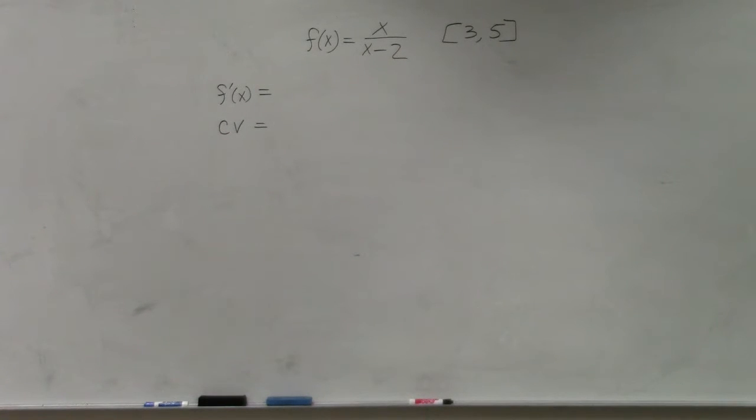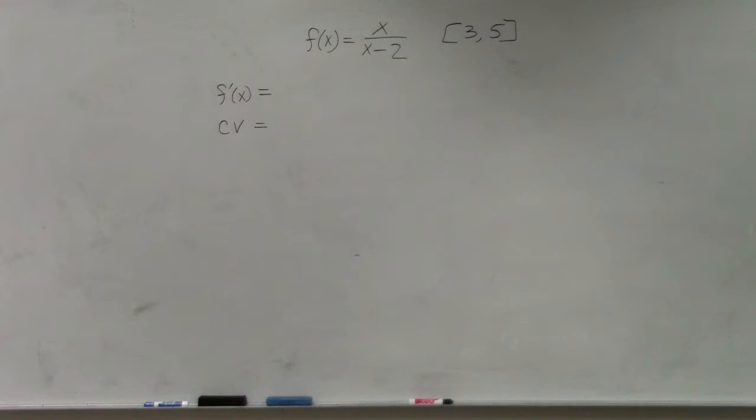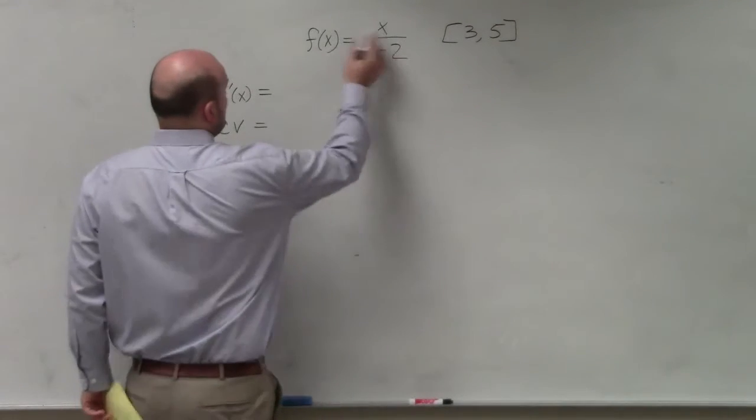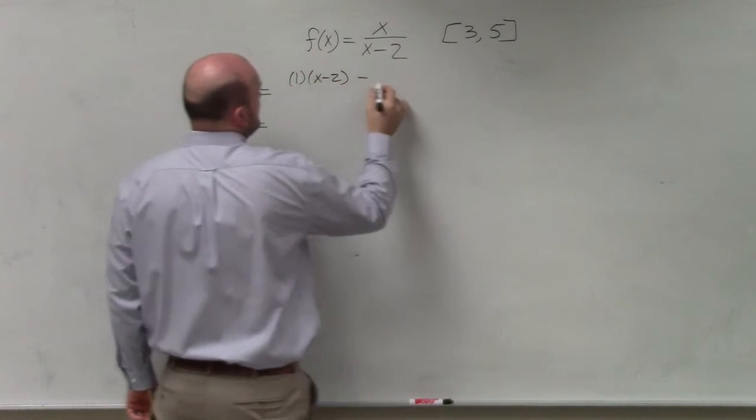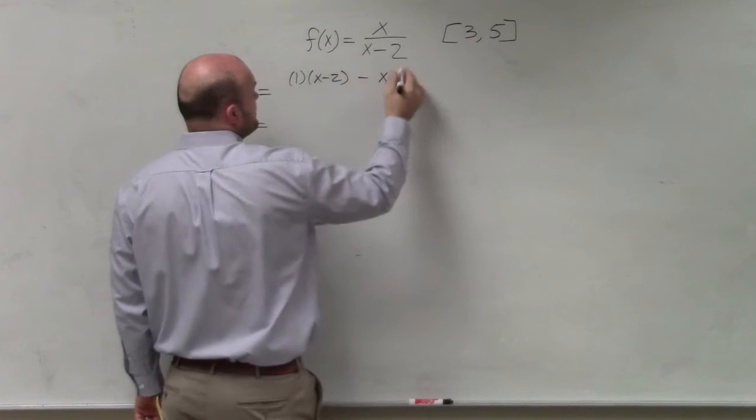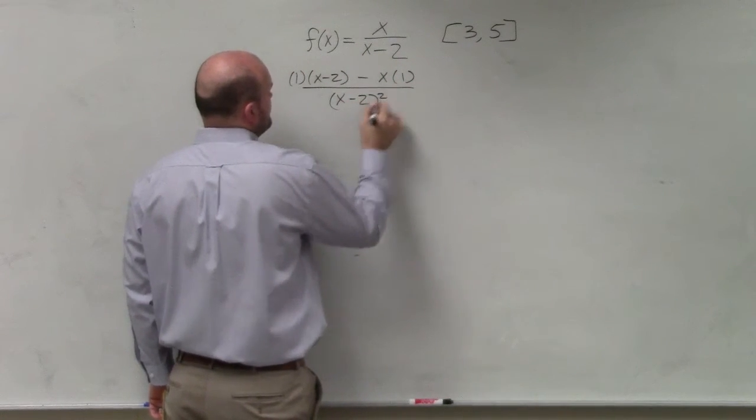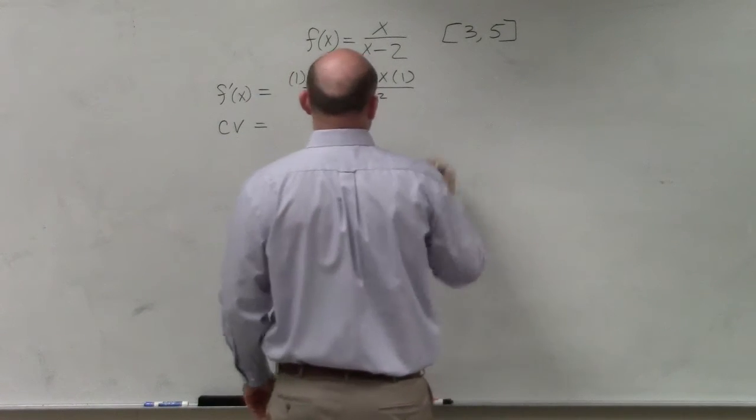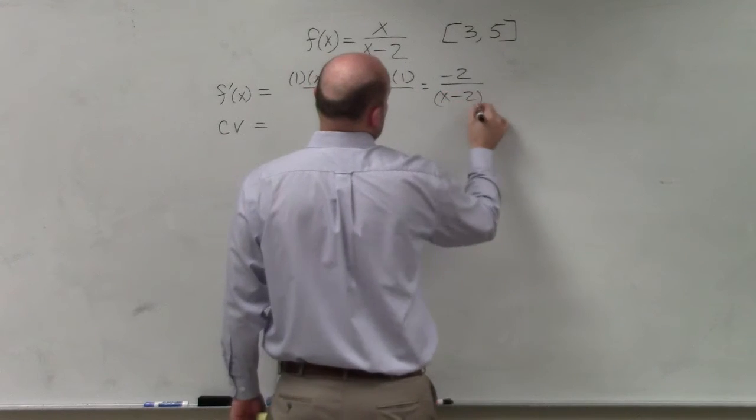All right, so again, taking the derivative, you guys can see this is an example of the product rule. So here a numerator times x minus 2 minus x times 1, all over x minus 2 squared. And what we get is negative 2 over x minus 2 squared.